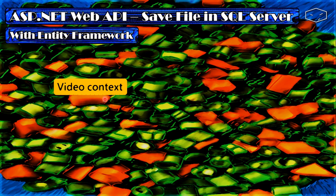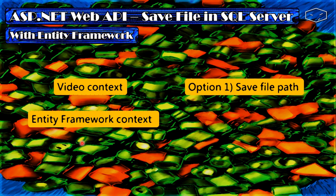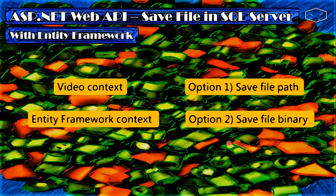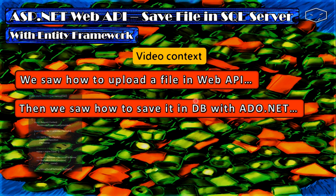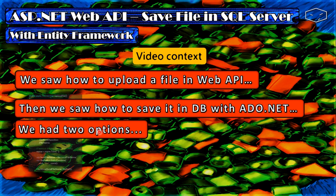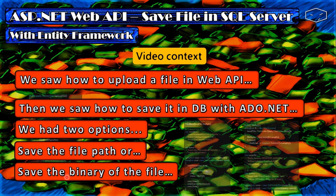Hello and welcome. I'll start this video by explaining why I did this, then explain a little about Entity Framework, then go to the code part where we will save the file path in the database and the second option: saving the file binary in the database. In the previous video we saw how to upload a file in Web API, and another video where we saved the file in the database using ADO.NET with those same two options.